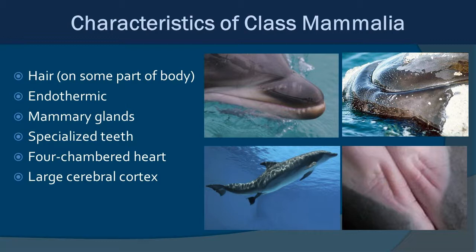Mammals have specialized teeth for a variety of functions, whether catching prey or munching on vegetation. They also have a four-chambered heart and a large cerebral cortex, which is generally indicative of intelligence. There are a lot of very smart mammals out there, and probably none smarter than some of the toothed whales and dolphins we're going to talk about.